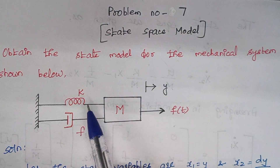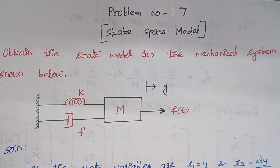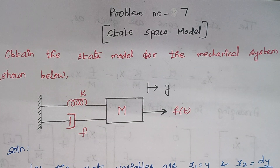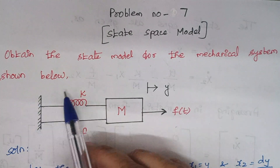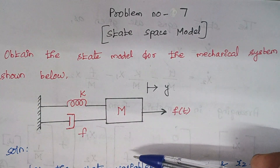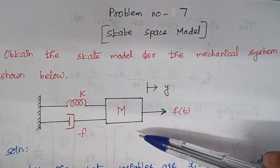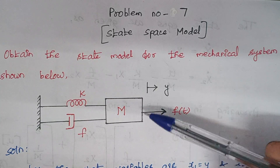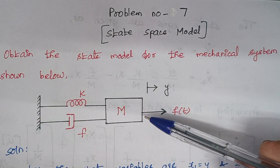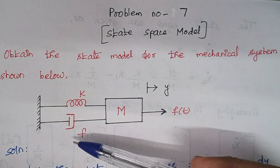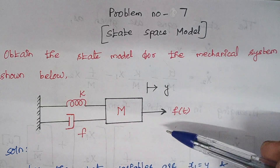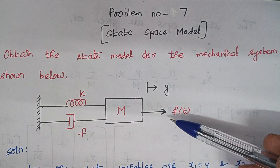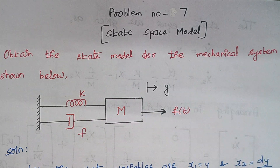The problem is: obtain the state model for the mechanical system shown below. This is the given mechanical system. The system has one mass, one spring, and one dashpot. Here f(t) is the applied force and the respective displacement is y.